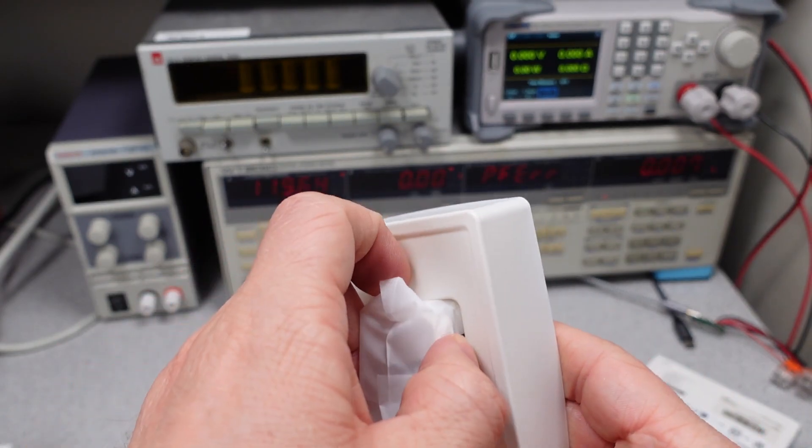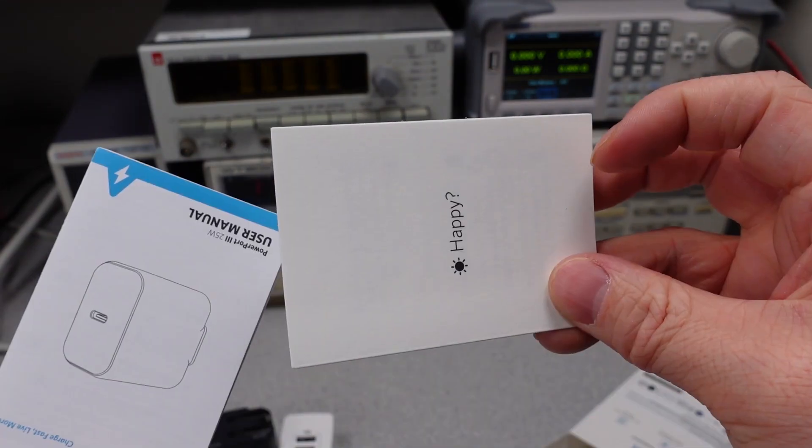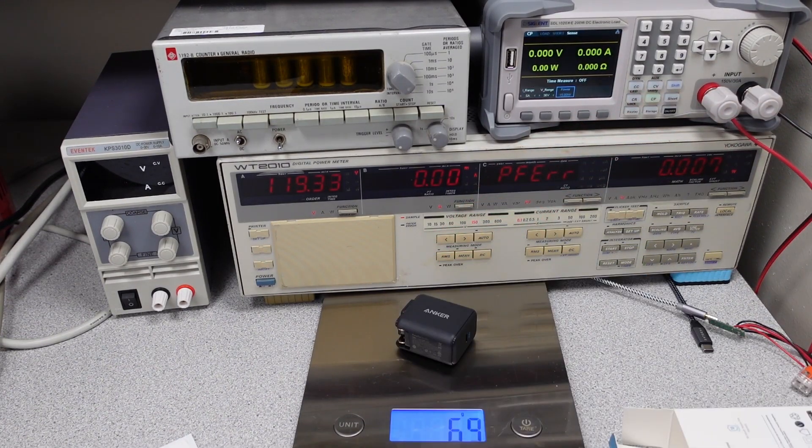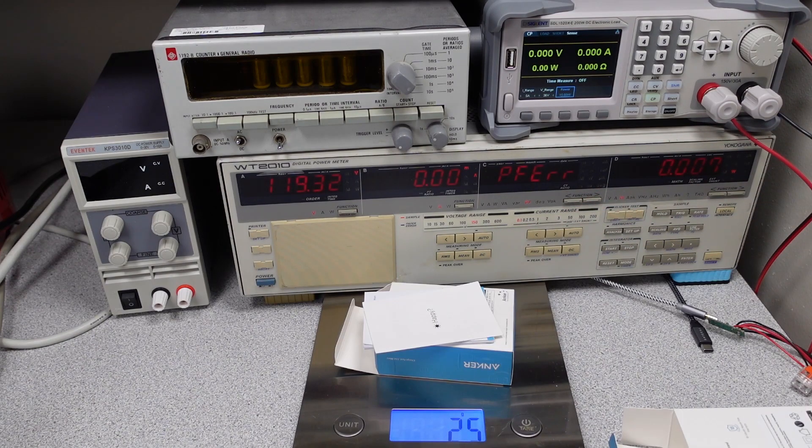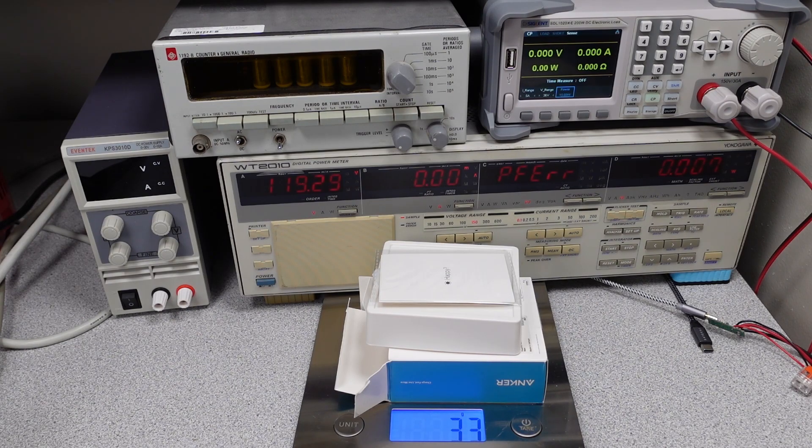Well, on this one, we're going to have to cheat a little because we're going to take one of the adapters out to weigh the packaging. Plastic wrapped happy manual. Unplastic wrapped happy manual. The PowerPort Mini weighs 39 grams. The PowerPort 3 weighs 69 grams. The packaging for the PowerPort 3 weighs 25 grams. The packaging for the PowerPort Mini weighs 33 grams.